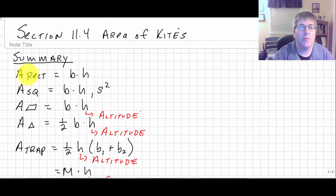So in summary, we have the area of a rectangle, we know that's base times height. Area of a square is base times height or side squared.